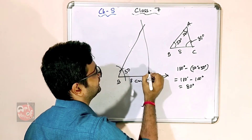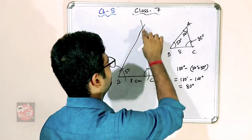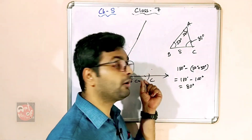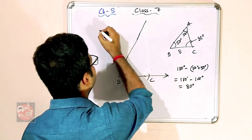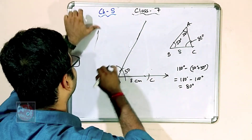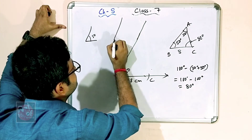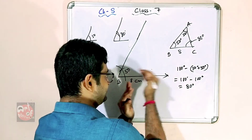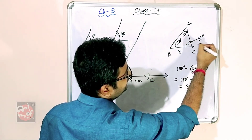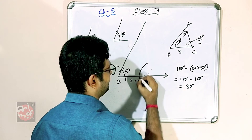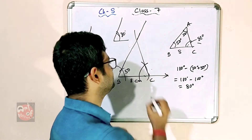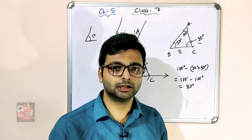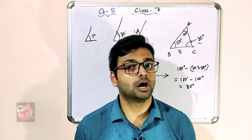Now from point C you have to draw an 80-degree angle and join and extend. By copied angle, you draw 50 degrees at B and 80 degrees at C. The inside direction is important because the triangle forms on that side. Cut it, join — this gives 80 degrees — and you will automatically get point A. This is the required triangle. That is the rough work.